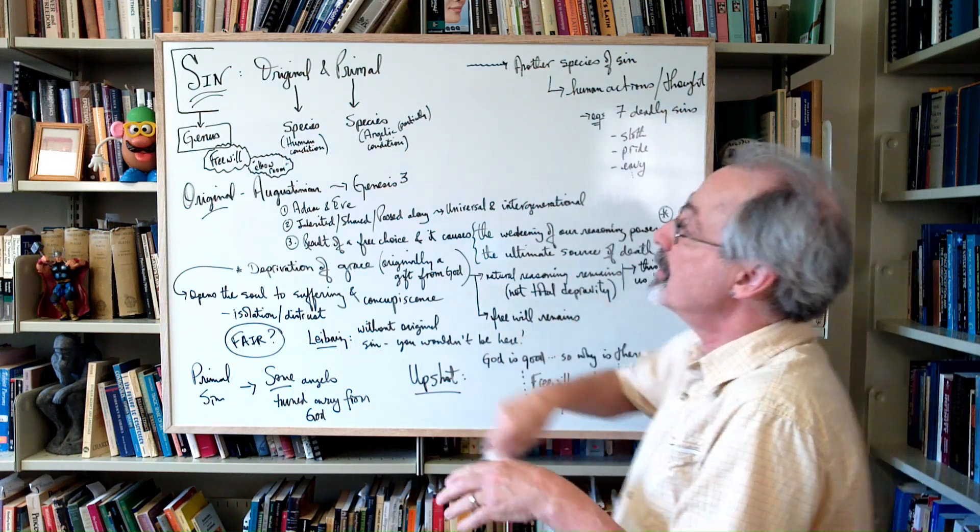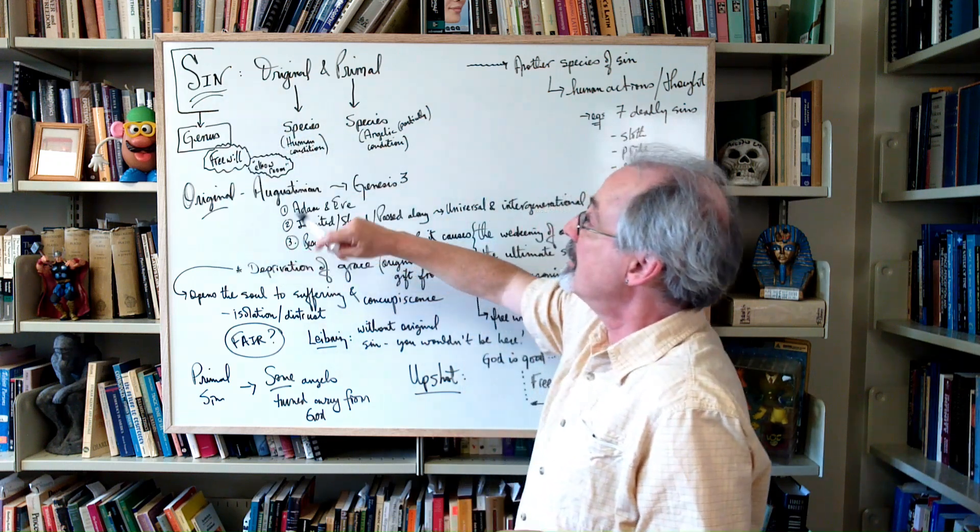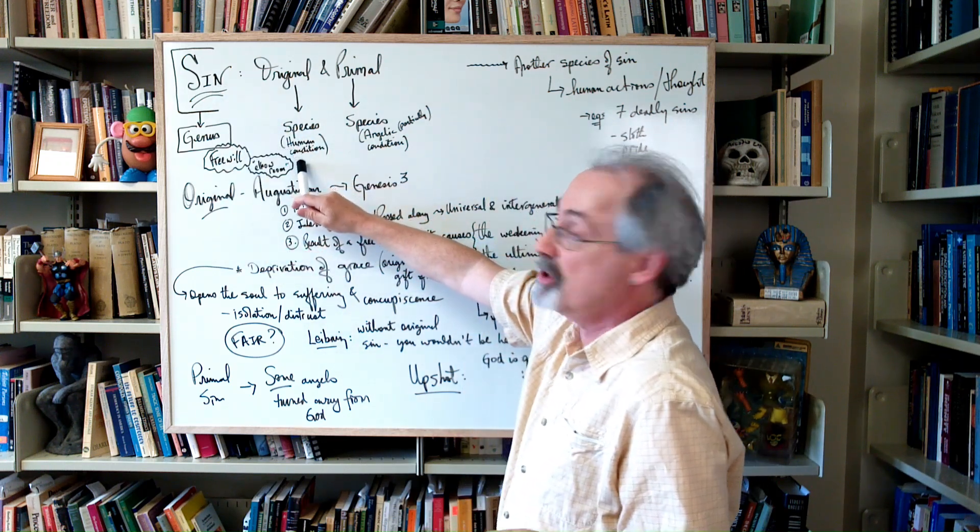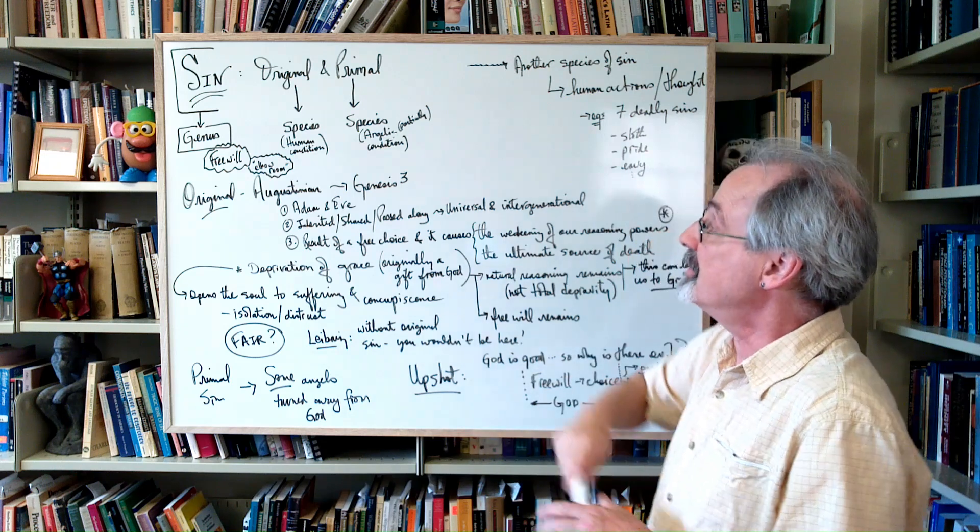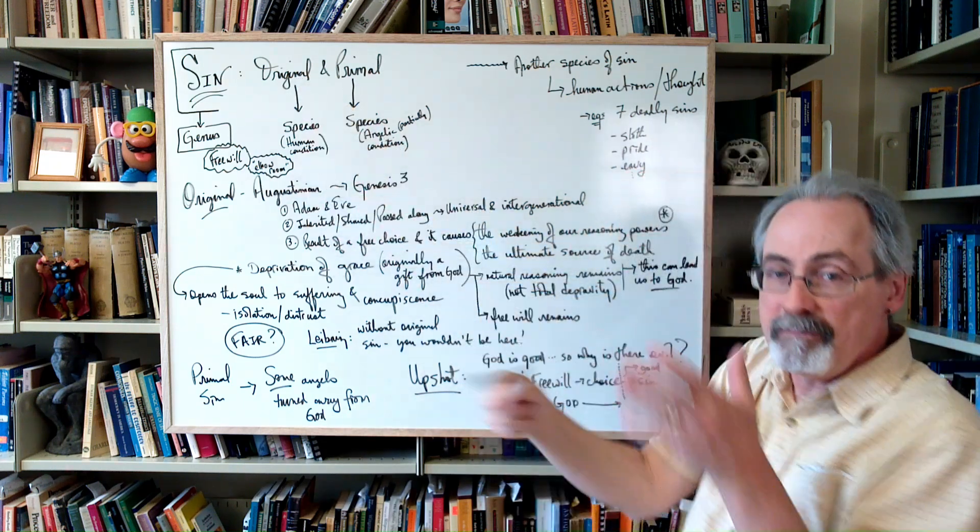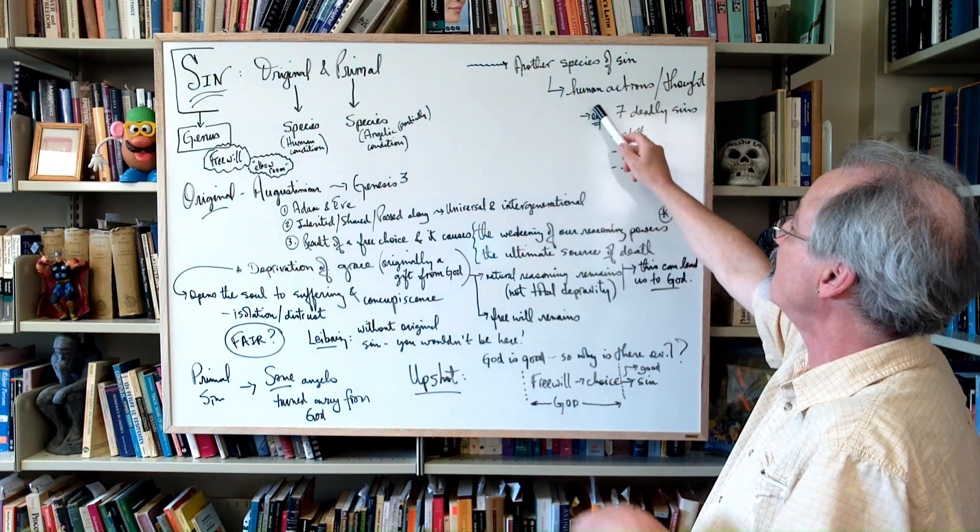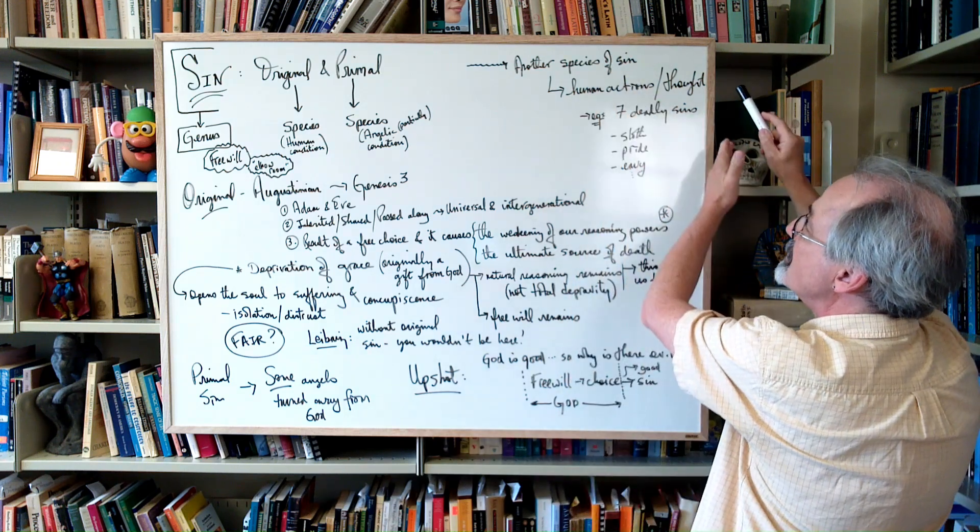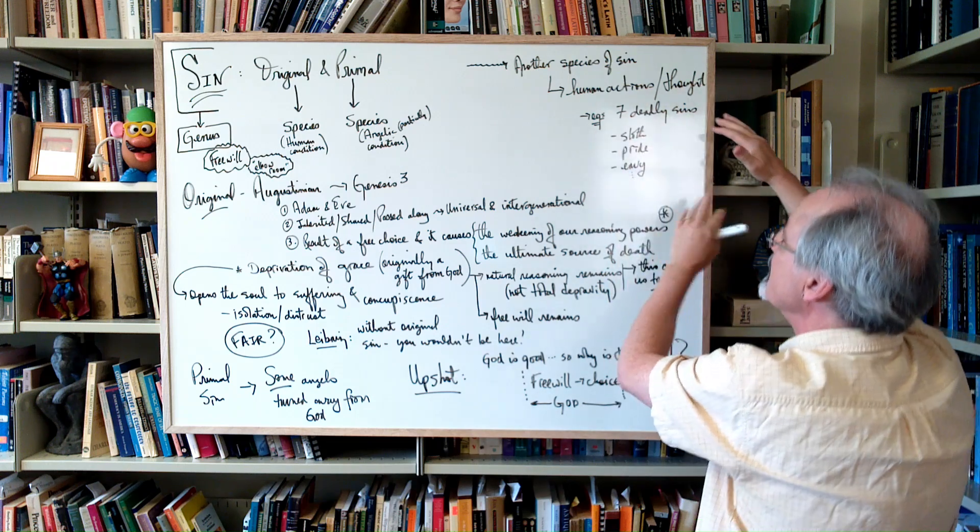The one I want to concentrate on, the species of sin, is it involves the human condition - that's called original sin. The other one that involves humans is another species of sin, which is going to be connected to human actions and thought, things like the seven deadly sins.